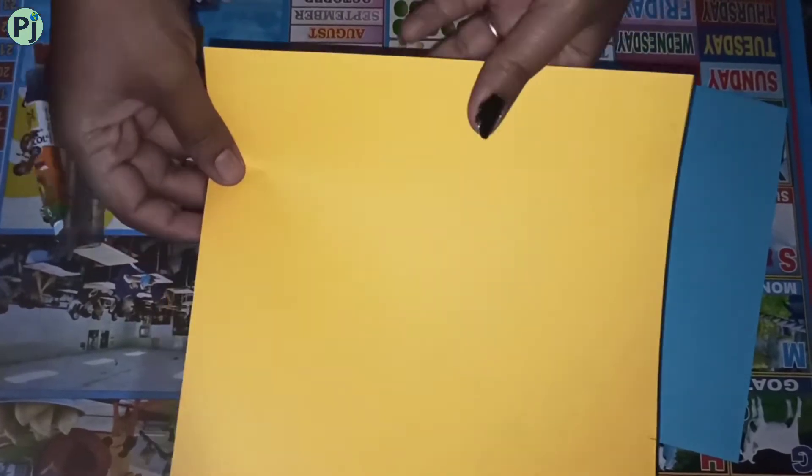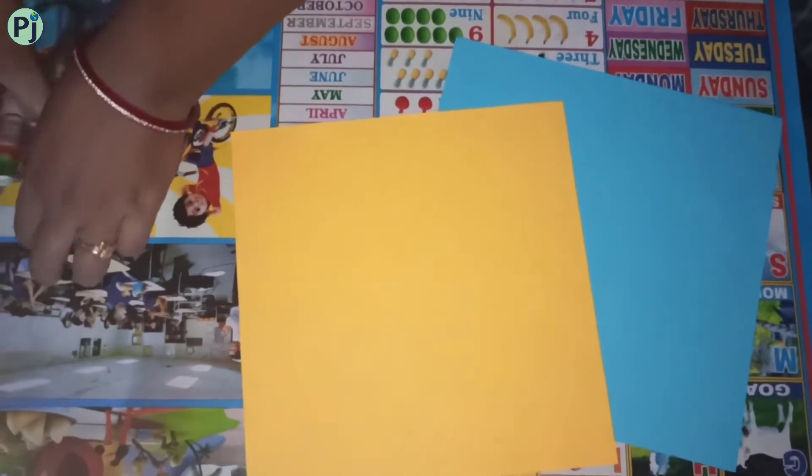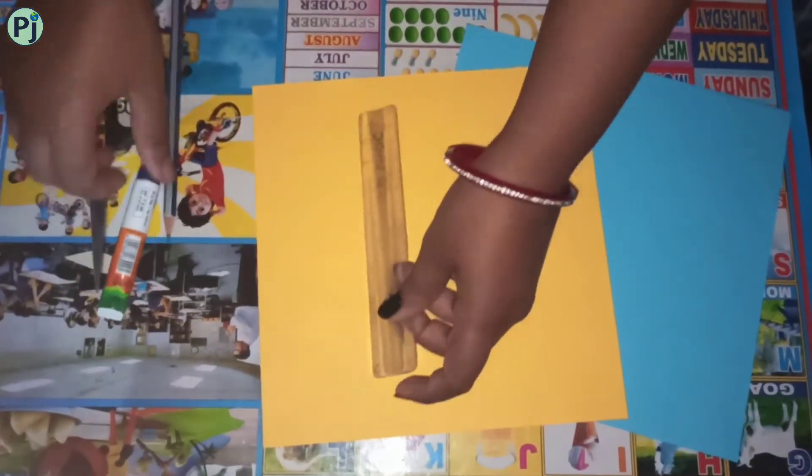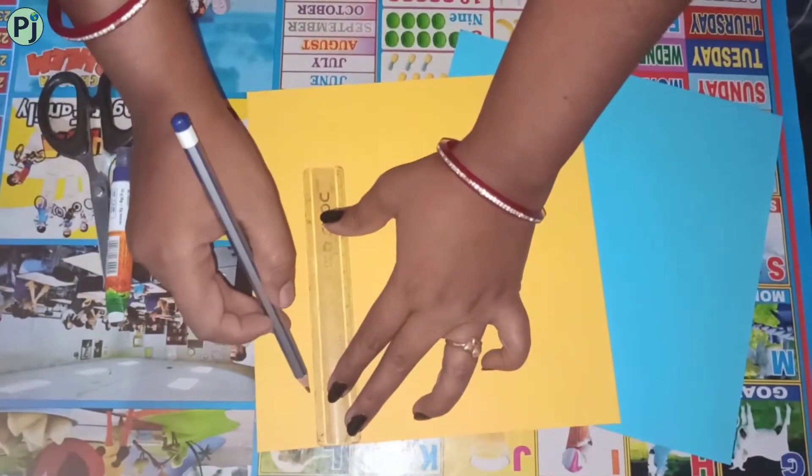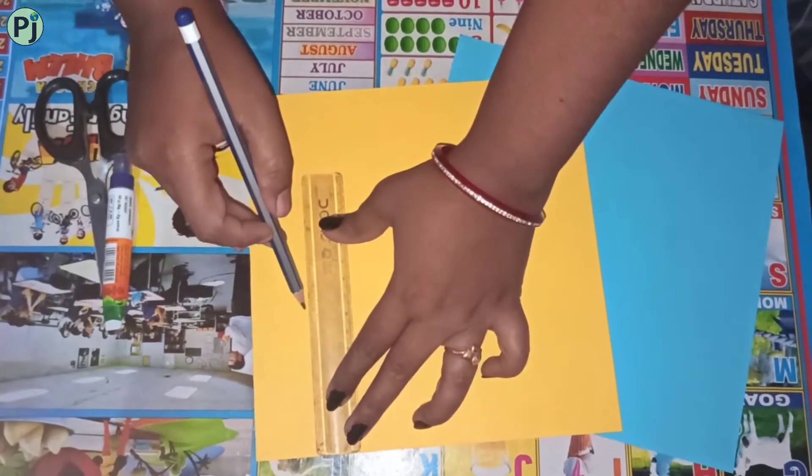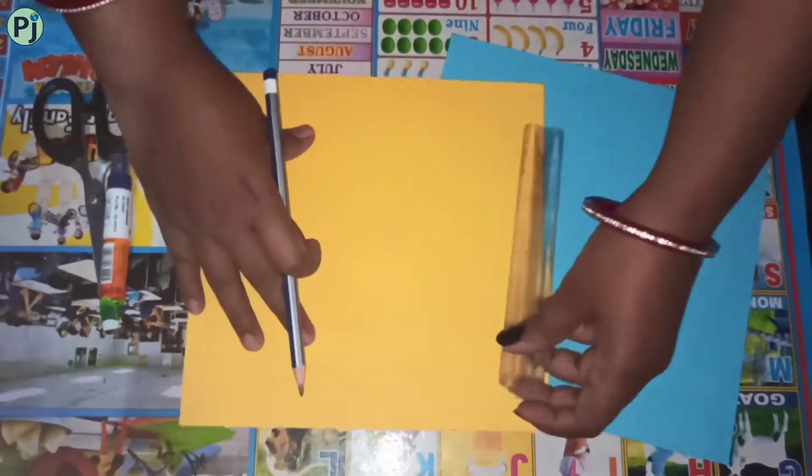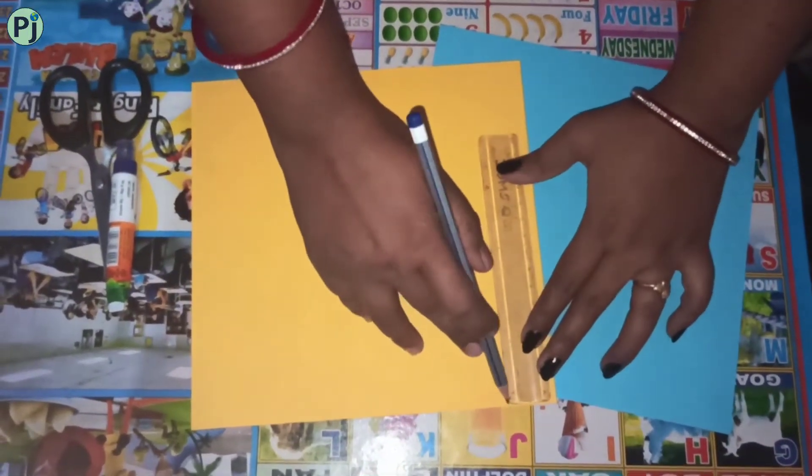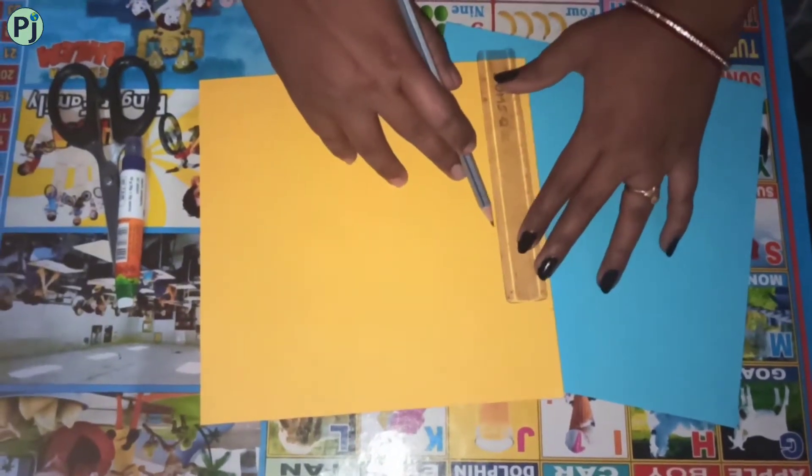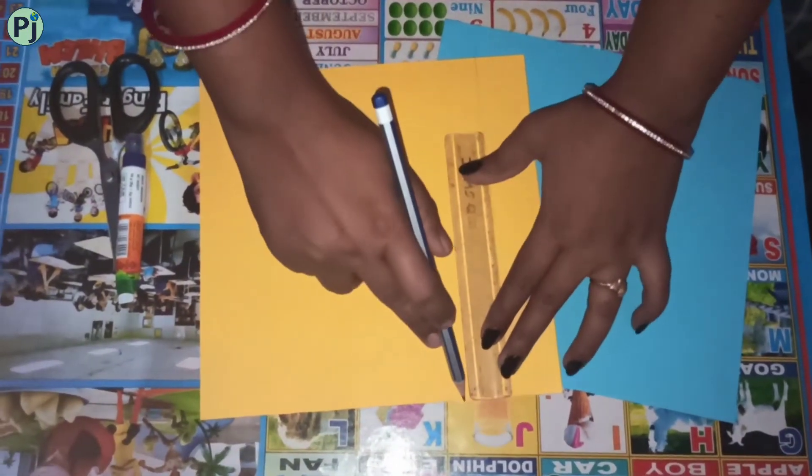Now I will show you how it is to be done. First of all, you will need a paper of different colors. The space between the lines should be equal. It should be around 1 inch. So draw dots spacing 1 inch like this. Then draw lines. Use scale while drawing lines.